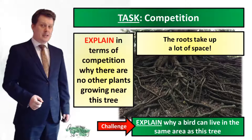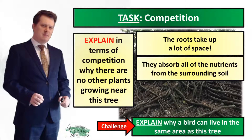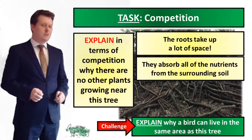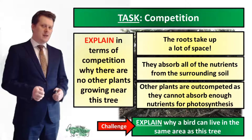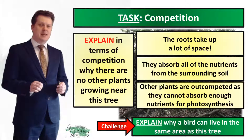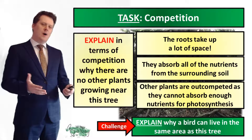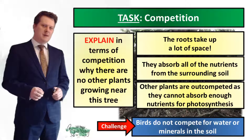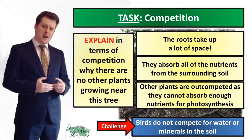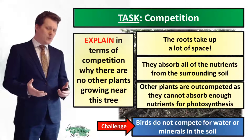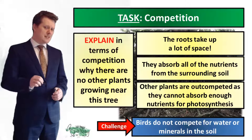There are no plants growing near this tree because these roots take up a lot of space. That means they will absorb all of the nutrients and water from the surrounding soil. Other plants and seeds that try to grow here are out-competed because they cannot absorb enough nutrients or enough water for photosynthesis. But why can a bird live in the same area? That's because the bird does not compete for the water or the minerals in the soil — the bird can fly elsewhere to get its water and food. The bird can even live in the tree; remember, that's our tree's niche.